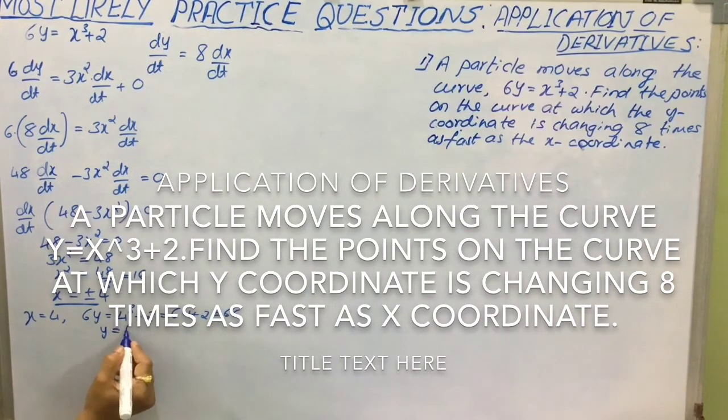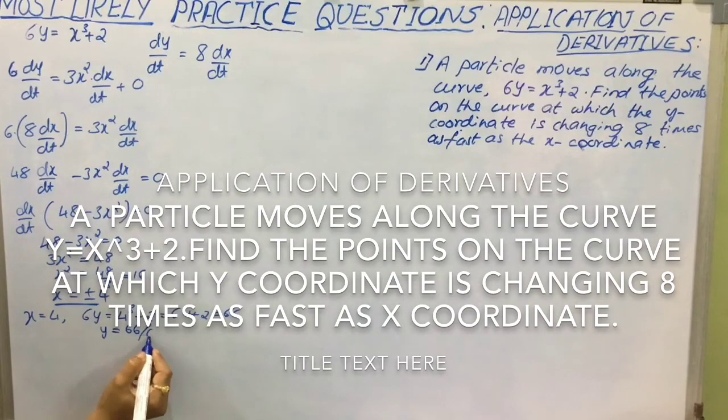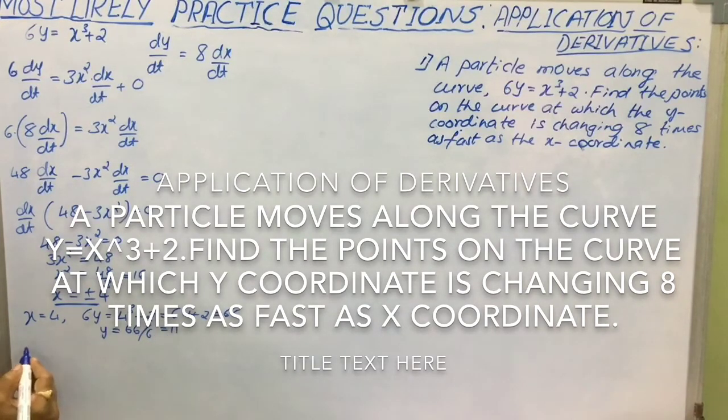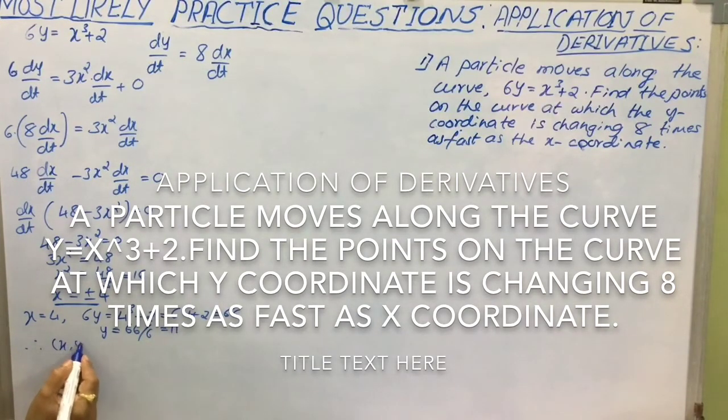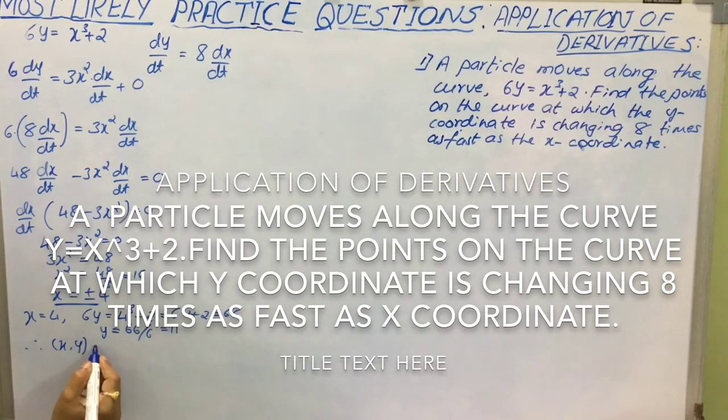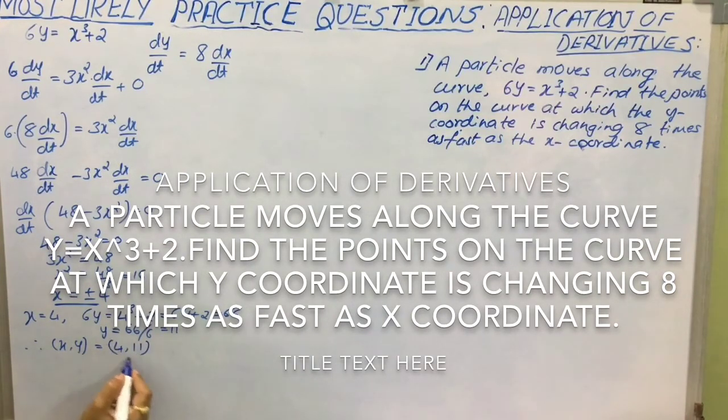Therefore y is equal to 66 by 6 that is 11. Therefore the first point which is required on the curve is 4, 11.